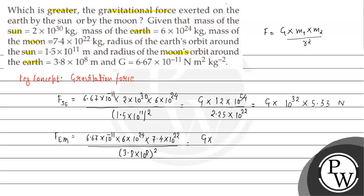Multiplying the numerator: 7.4 × 6 = 44.4, and 10^24 × 10^22 = 10^46. For the denominator: 3.8 squared is 14.44, and squaring 10^8 gives 10^16. So we have G × 44.4 × 10^46 divided by 14.44 × 10^16. The value of 44.4 divided by 14.44 is approximately 3.07, giving 3.07 × 10^20 Newtons.